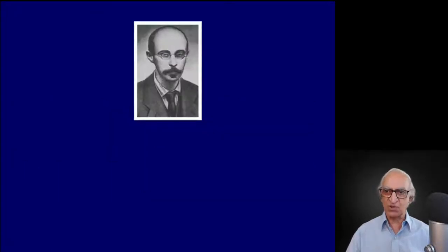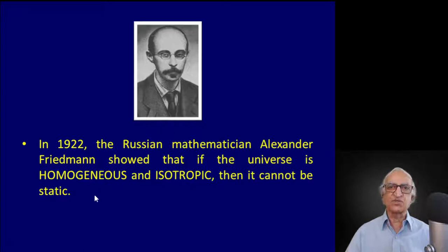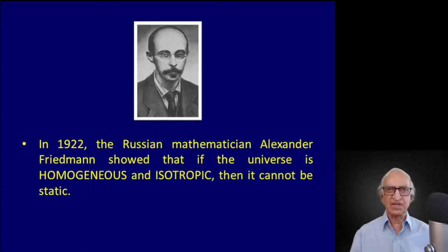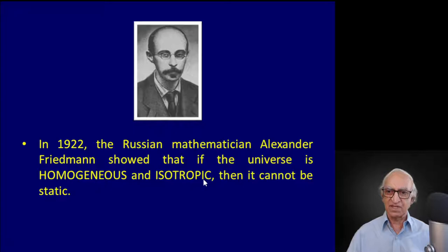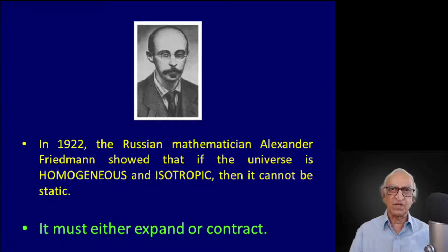Five years later, in Moscow, Russia, a young mathematician by name Alexander Friedman studied Einstein's general theory of relativity under the assumption that the universe was homogeneous and isotropic. If you look at our universe with very large telescopes, it seemed like the universe was indeed homogeneous and isotropic. Friedman came to the extraordinary conclusion that such a homogeneous and isotropic universe cannot be static within the framework of Einstein's general theory of relativity — it must either expand or contract.